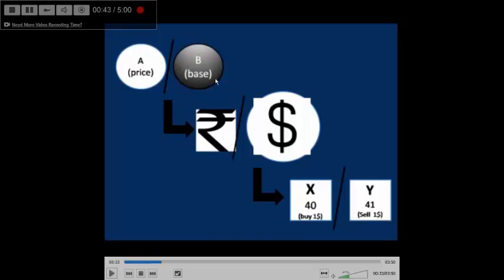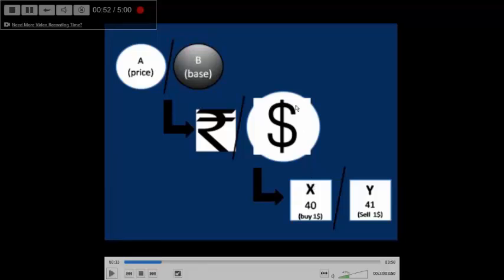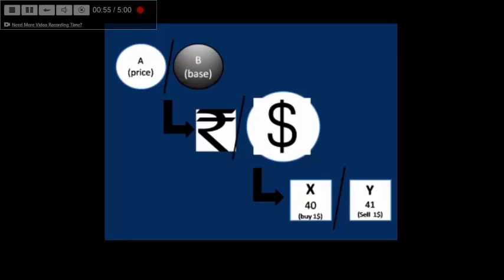Rate is always given of the base currency. In this case, the rate of buying dollar by the dealer is 40 and the rate of selling dollar by the dealer is 41.